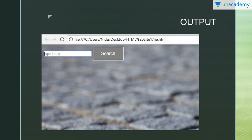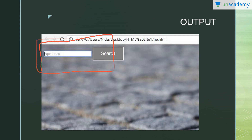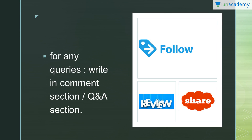This is the output: you can see 'Type here' as the placeholder text, the button, and the text field. You can vary its width and height by adding 'width' and 'height' attributes accordingly. So this is all about this video. If you like it, don't forget to rate, review, and share. For any queries, write in the comment or Q&A section. In my next video I will be showing you how to create a login page. Thank you.